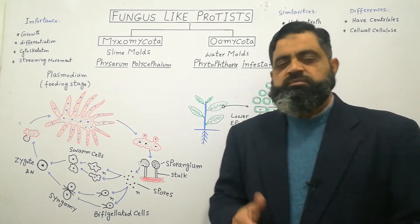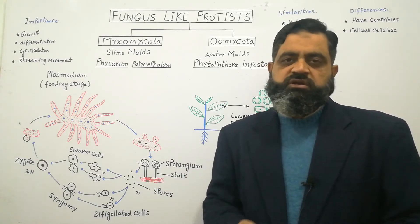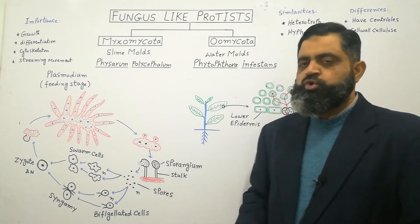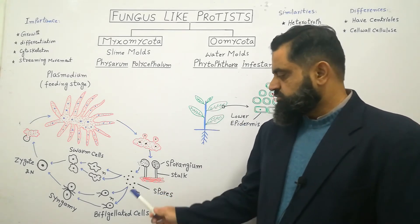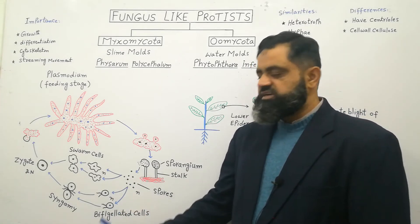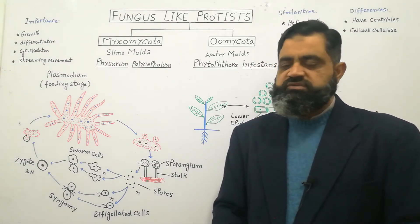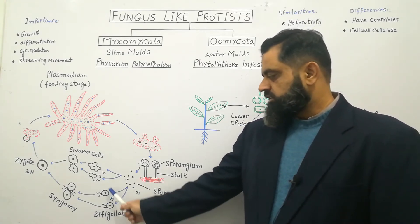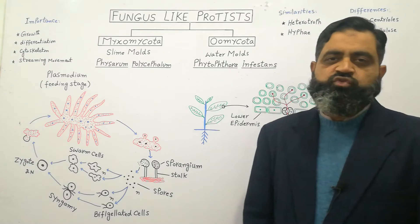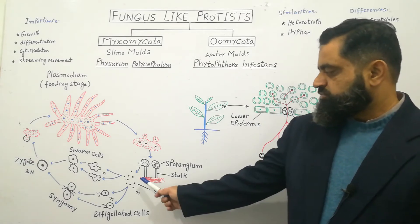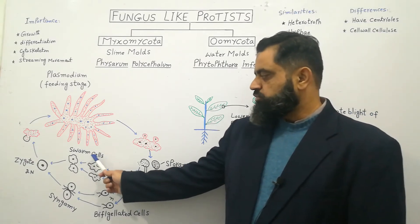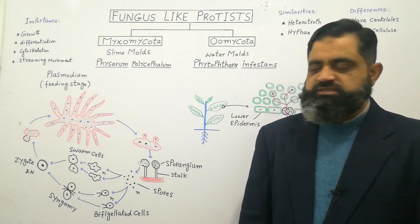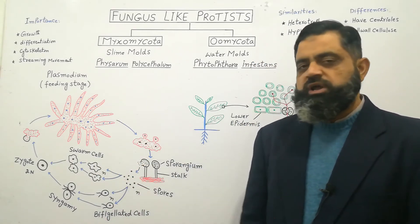When conditions become favorable in the next season — summer — these spores germinate into two different types of cells. Some spores germinate into biflagellated cells, also known as reproductive cells, which can be thought of as male and female gametes. Both are haploid and have two flagella. Other spores germinate into amoeba-like cells known as swarm cells, which are also haploid.